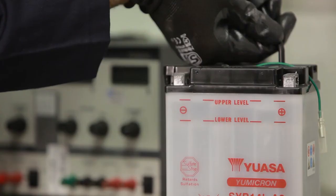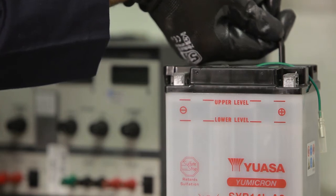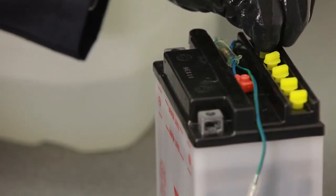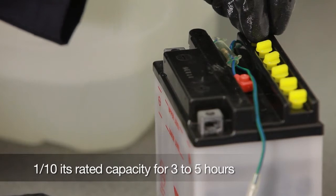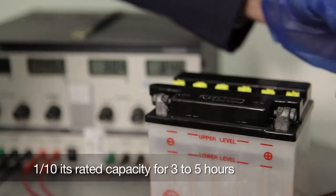If, after 30 minutes, the electrolyte level has fallen, top up to the upper fill level. Replace the filler caps loosely and begin to charge the battery at one-tenth its rated capacity for three to five hours. Charging at a higher rate could damage the battery.